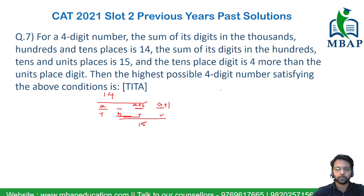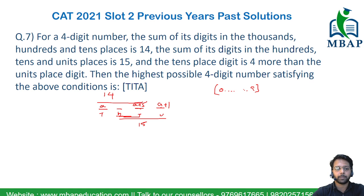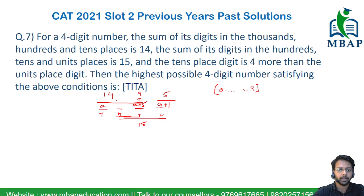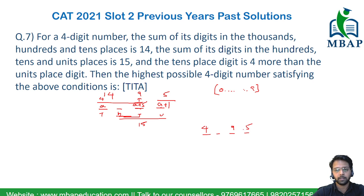All four digits of this four-digit number can accommodate any value from 0 to 9, and we want to maximize it. The maximum value of 'a+5' will be 9. If that is the case, then 'a+1' will become 5 and 'a' will become 4. So we understand that the thousands place is 4, the tens digit is 9, and the units place is 5. The hundreds digit we do not know yet.